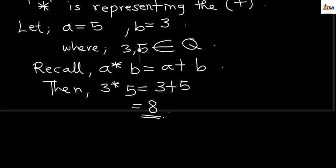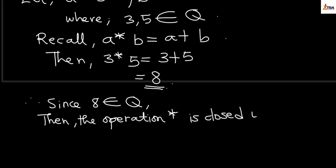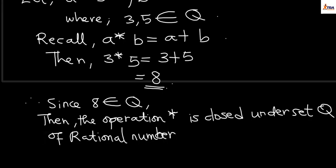So this is all we need to do. Apply the operation based on the values given, or take two random values that are elements of the particular set, test it, and determine whether it is closed or not closed. The operation asterisk here is closed on set Q of rational numbers because 8, our answer, is also an element of set Q. In the next class, we'll look at another example on the closure property. See you in the next class.